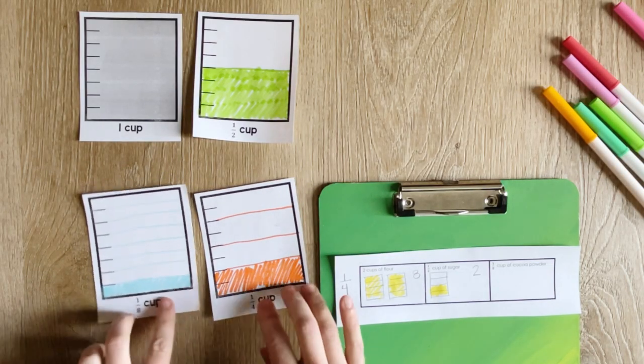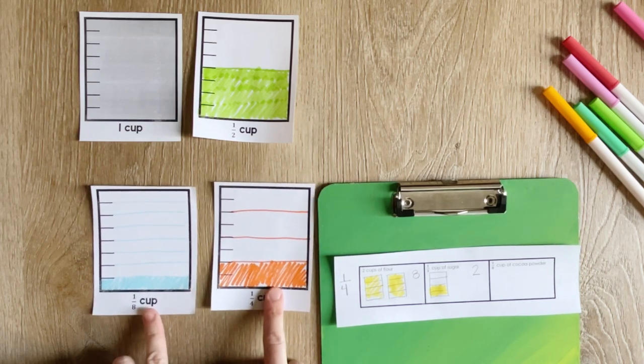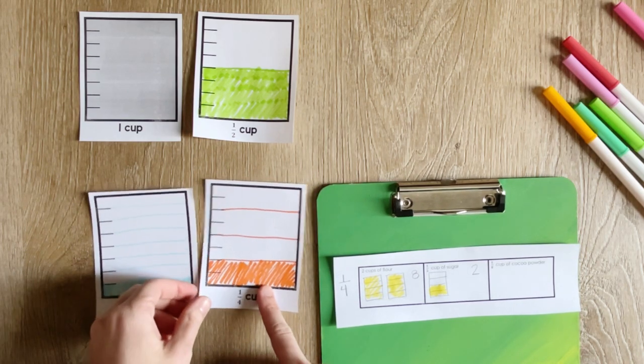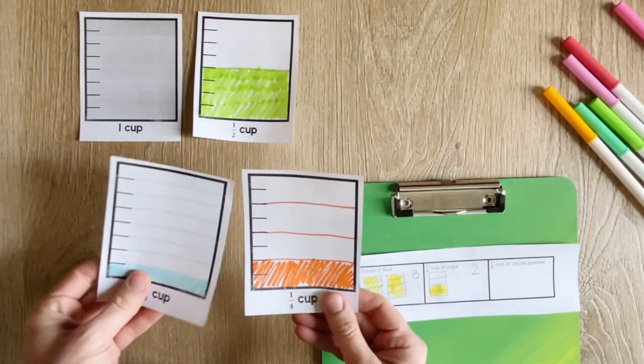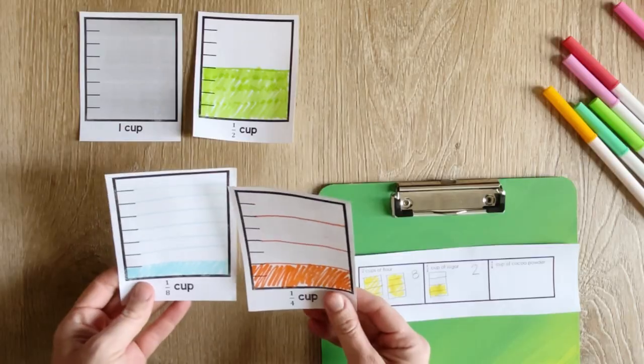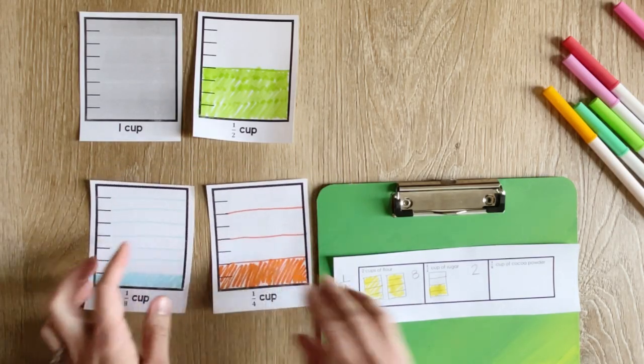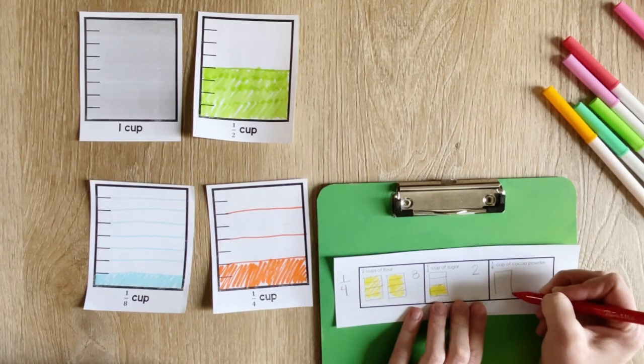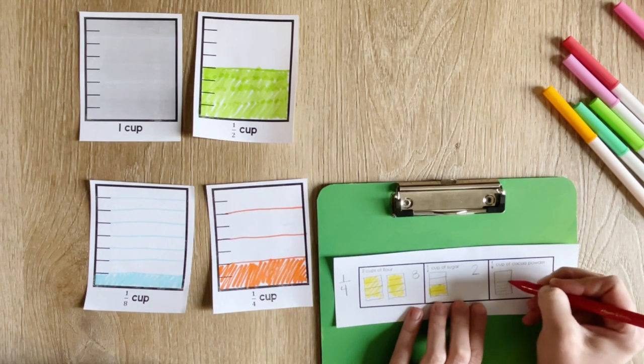And then we'll look at this one where it gets a little tricky. Now we need one-eighth a cup, but we only have a one-fourth cup measurement. So is it even possible to measure an eighth a cup of cocoa powder? That might be tricky for students to think about. How can I get a smaller amount? How do I need to fill up my one-fourth cup when I only need an eighth? So let's draw this visual to help us think through it.